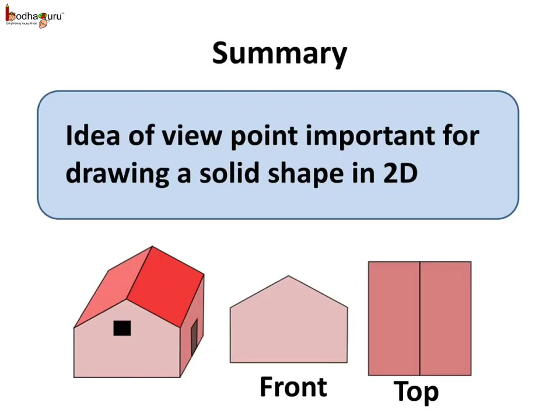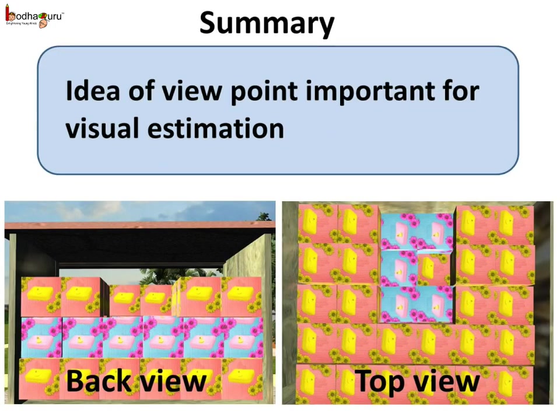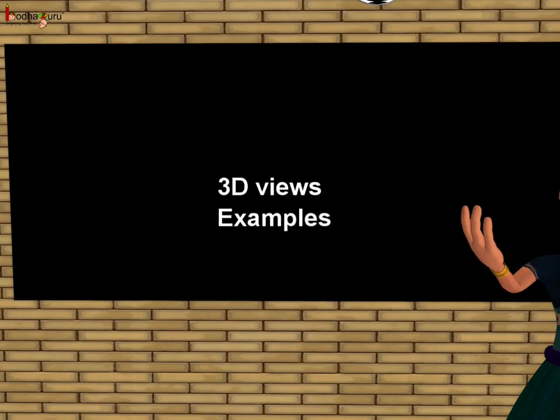So we see the idea about different viewpoints of solid shapes is important for drawing solid shapes, as the solid shapes may look different from different angles — say from the top view, side view, or the front view. And it is also important for visual estimation in real life, like we saw in the case of counting the total number of boxes in the godown.